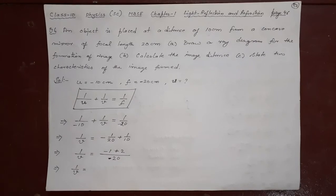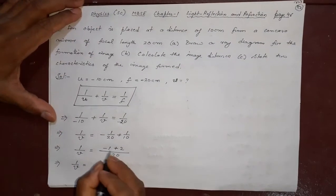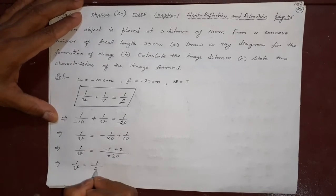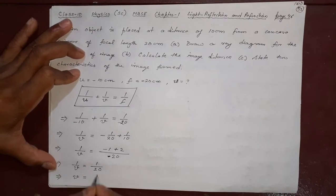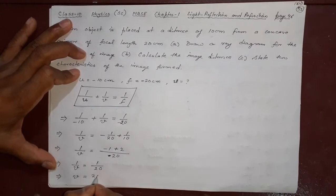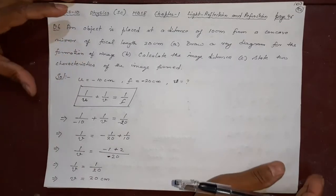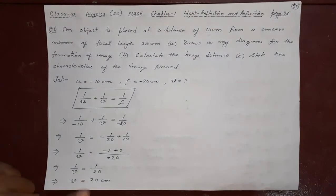it will become and then the 1 by v will be equal to 1 minus 2 is 1. Plus sign is bigger. So, it will be plus. So, what I am getting here is v is equal to inverse of this is 20 centimeter. It is coming plus that means it is on the right side. Now,